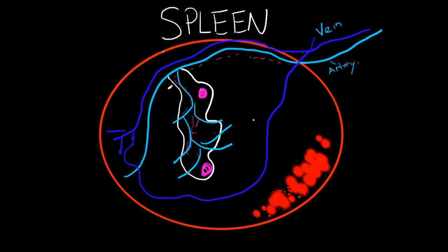We have follicles. I drew those in just in case you had to label those. Right here we have our bloodborne pathogen being trapped by dendritic cells.